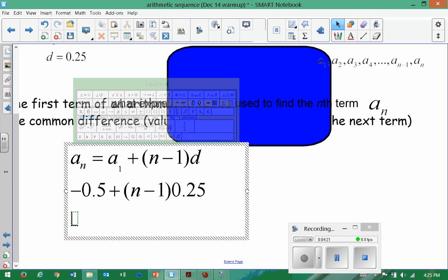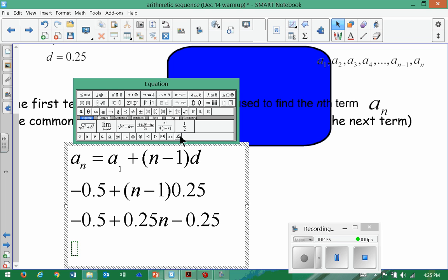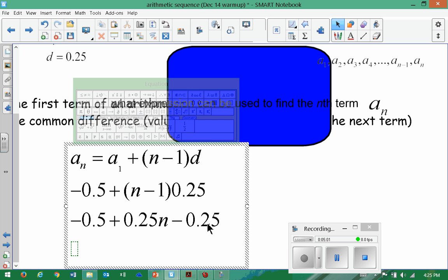Now, let's simplify this. So, it's going to be negative 0.5 plus, and let's go ahead and distribute the 25 hundredths. That's going to give us, let's see, 0.25n minus 0.25. And we have two like terms. We have our like terms with negative 5 tenths and our negative 25 hundredths, because they're both just numbers.